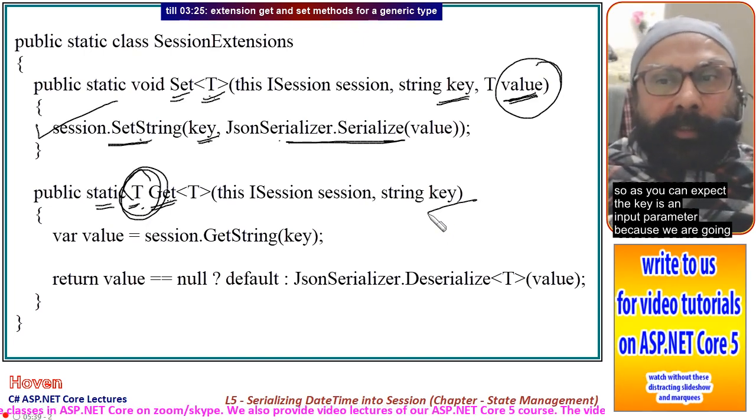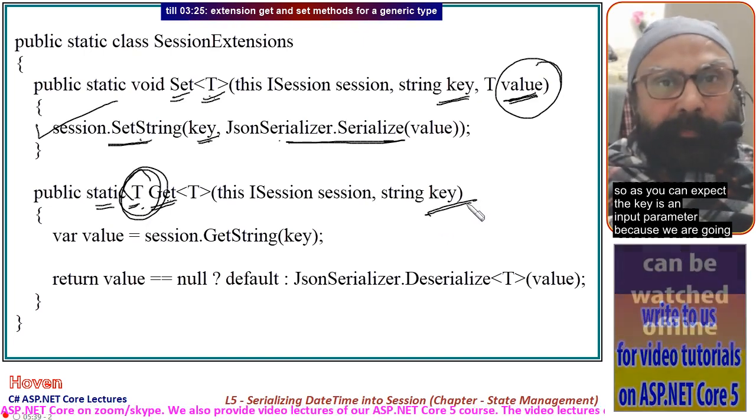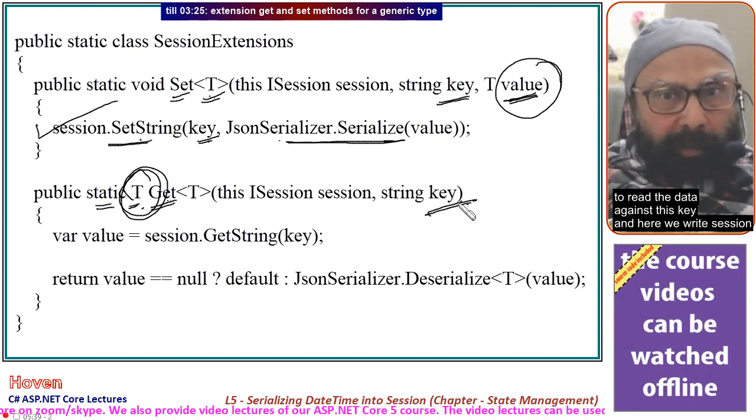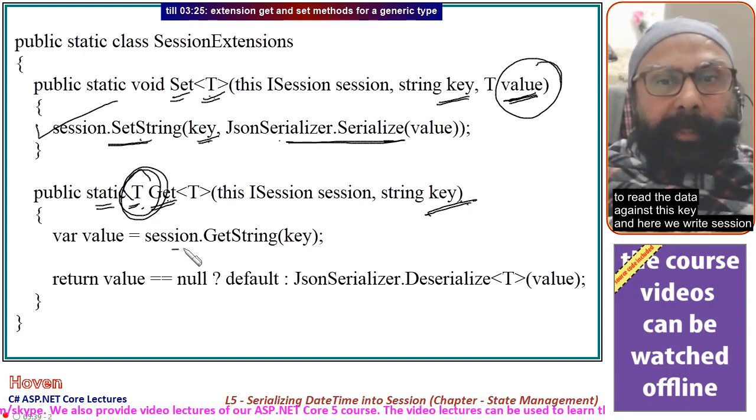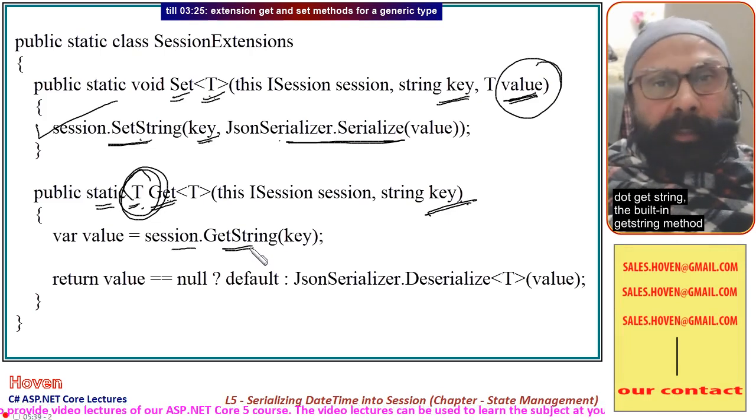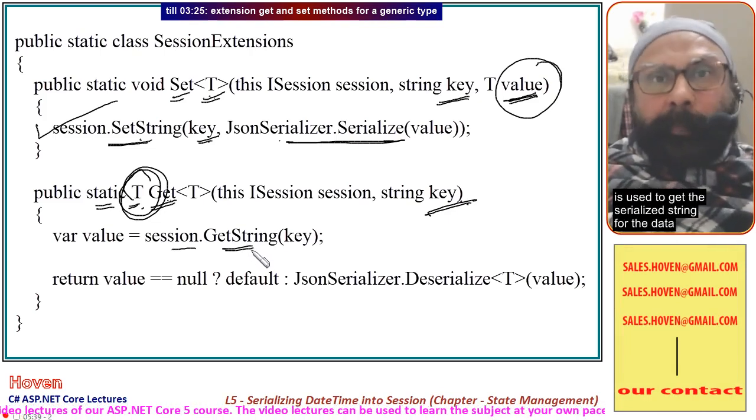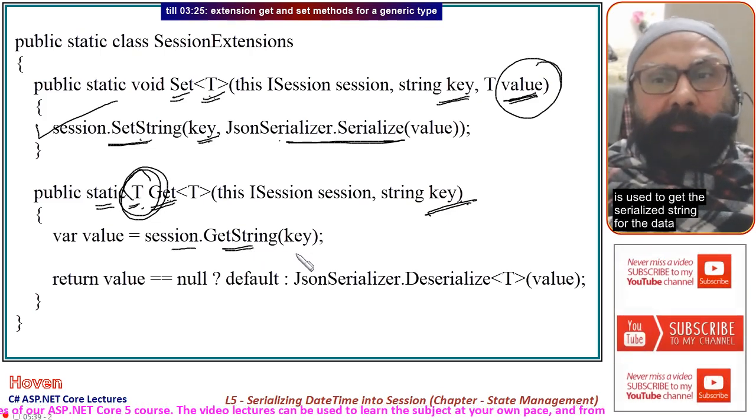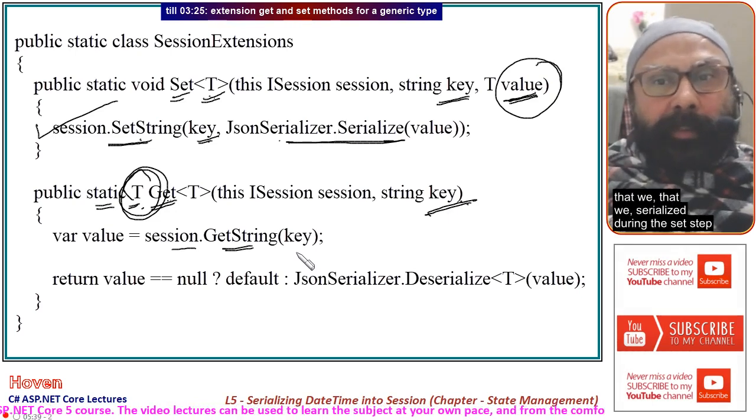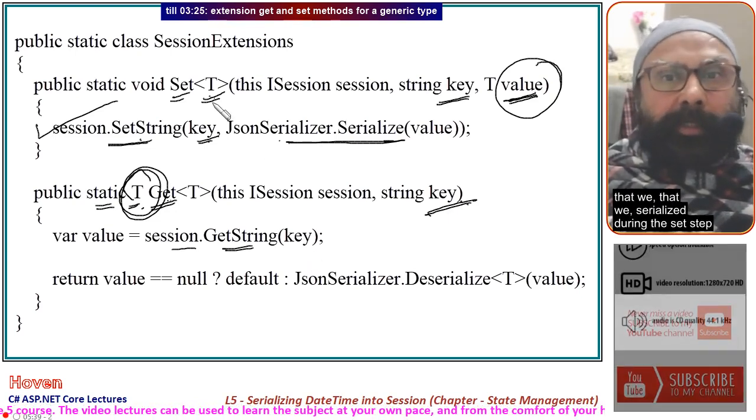the key is an input parameter because we are going to read the data against this key, and here we write session.GetString. The built-in GetString method is used to get the serialized string for the data that we serialized during the set step.